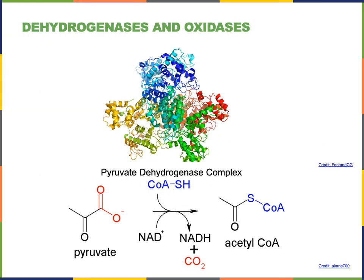Dehydrogenases and oxidases are the enzymes that catalyze reduction oxidation reactions. We can see an example here: the pyruvate dehydrogenase complex is a large enzyme that will catalyze the oxidation of pyruvate, producing acetyl coenzyme A.